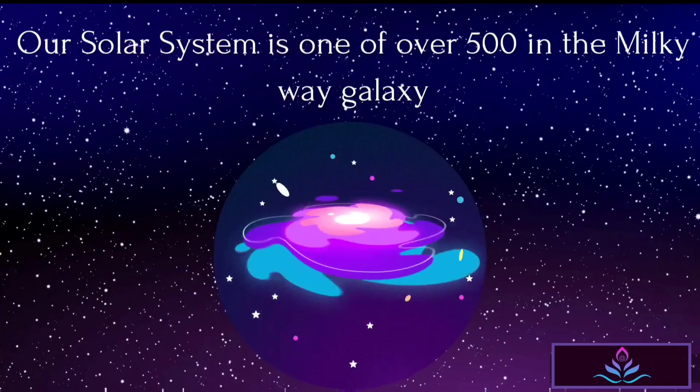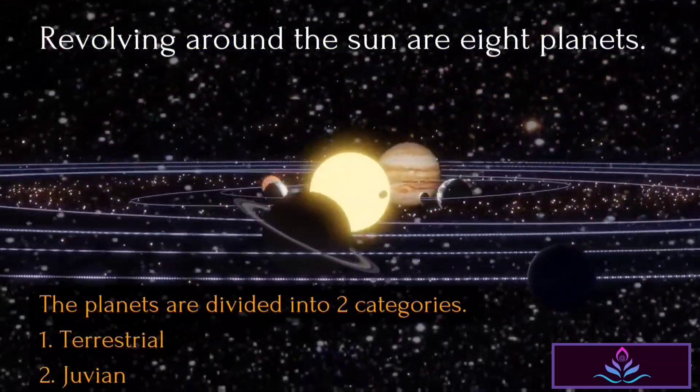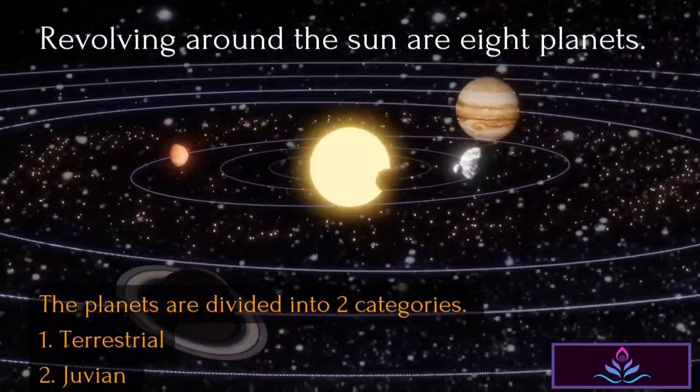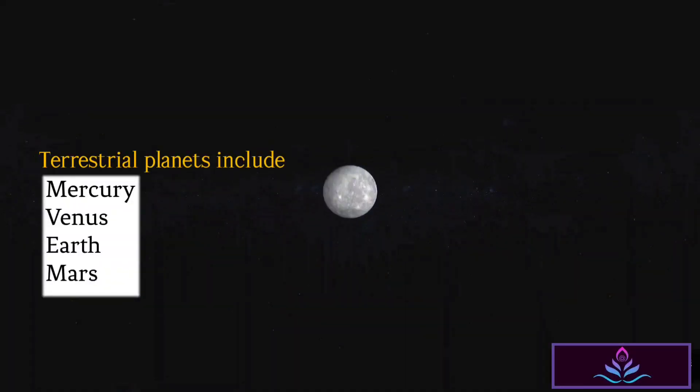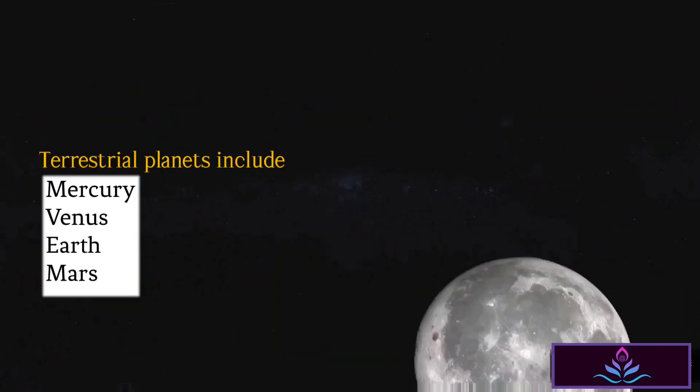Our solar system is one of over 500 in the Milky Way galaxy. Revolving around the Sun are eight planets. The planets are divided into two categories: terrestrial and Jovian. Terrestrial planets include Mercury, Venus, Earth, and Mars.